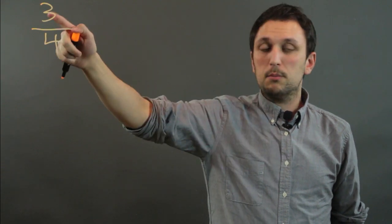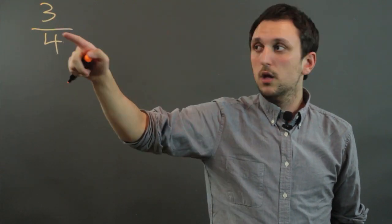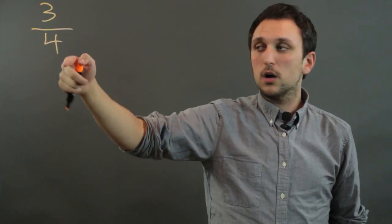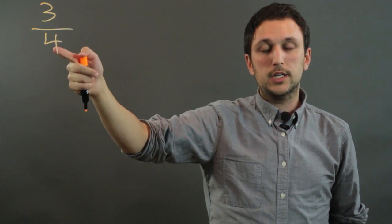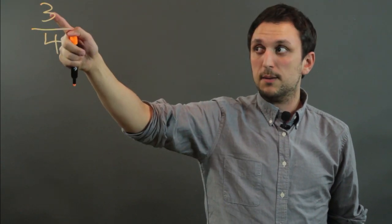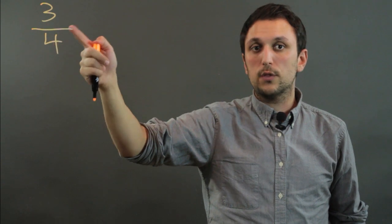Now another fact is that the top of any fraction is called the numerator. This line here is called the division bar, and this number here is called the denominator. So any number on top is the numerator, any number on the bottom is called the denominator.